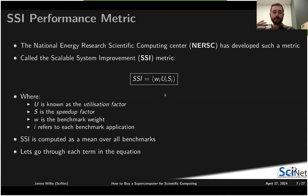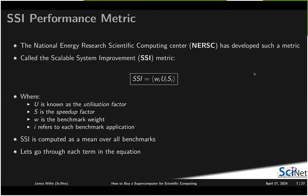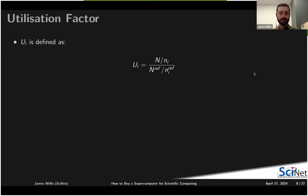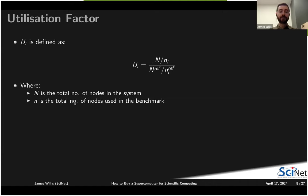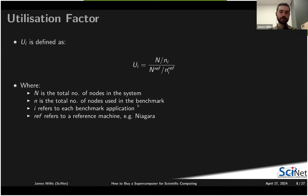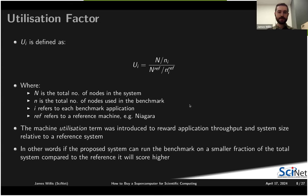I'll go through each term in more detail. The utilization factor U is defined where N is the total number of nodes in the system and n_i is the total number of nodes used in the benchmark application. 'ref' refers to the reference machine — in our case, Niagara — so we ran each benchmark on Niagara as a baseline to compare all newer proposed systems. This term captures machine utilization and rewards application throughput and system size relative to the reference system.